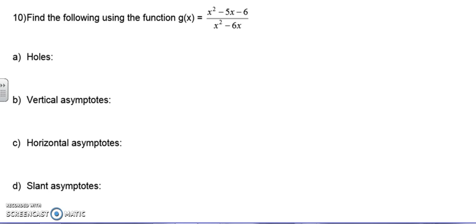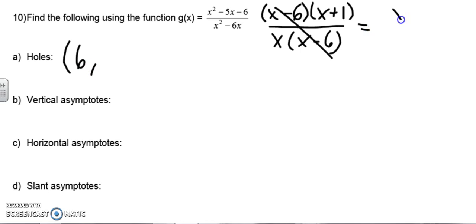Looking at number 10, I think we have time to do this. We're going to factor the top and factor the bottom, minus 6 plus 1. Bottom x times x minus 6. We're going to cancel. That gives me my x number. So my x number is 6. What's left? x plus 1 over x. So if I plug 6 into whatever's left, I'm going to get 7 over 6.